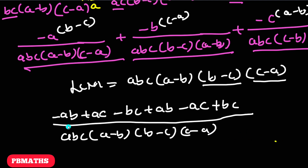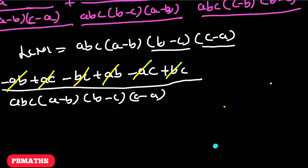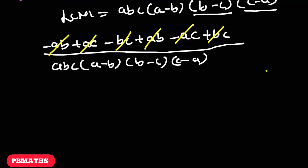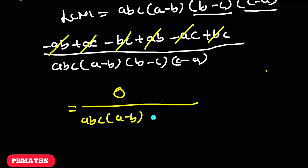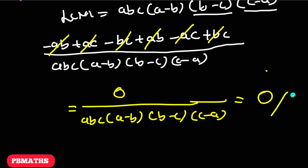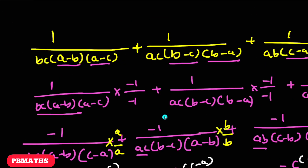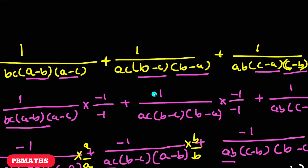Now, if you observe the numerator, we can cancel: minus ab plus ab, plus ac minus ac, minus bc plus bc — everything in the numerator cancels out. So the numerator is 0, divided by abc times (a minus b) times (b minus c) times (c minus a). This means the entire expression equals 0. That is the solution. I hope you all got this. Thank you for watching the video.